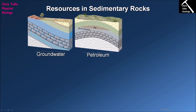Over the top of the reservoir rock we also have to have another layer of rock which is impermeable to the oil and gas so they can't escape. This is sometimes referred to as the cap, and it stops the oil or gas leaving the reservoir rock. Geologists can then use relatively basic geology to identify areas where oil or gas would naturally accumulate, and study those areas using geophysics or simply drill into them to check for oil or gas.